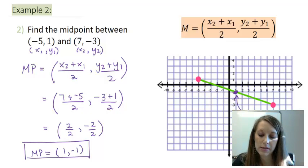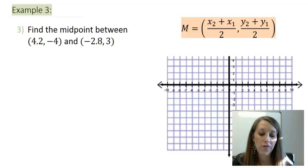I have one more example of this. So find the midpoint between 4.2 and negative 4, and negative 2.8 and 3. I encourage you to work this one on your own by using the formula, as well as graphing it on your own to double check it. So this would be a perfect time to pause the video.